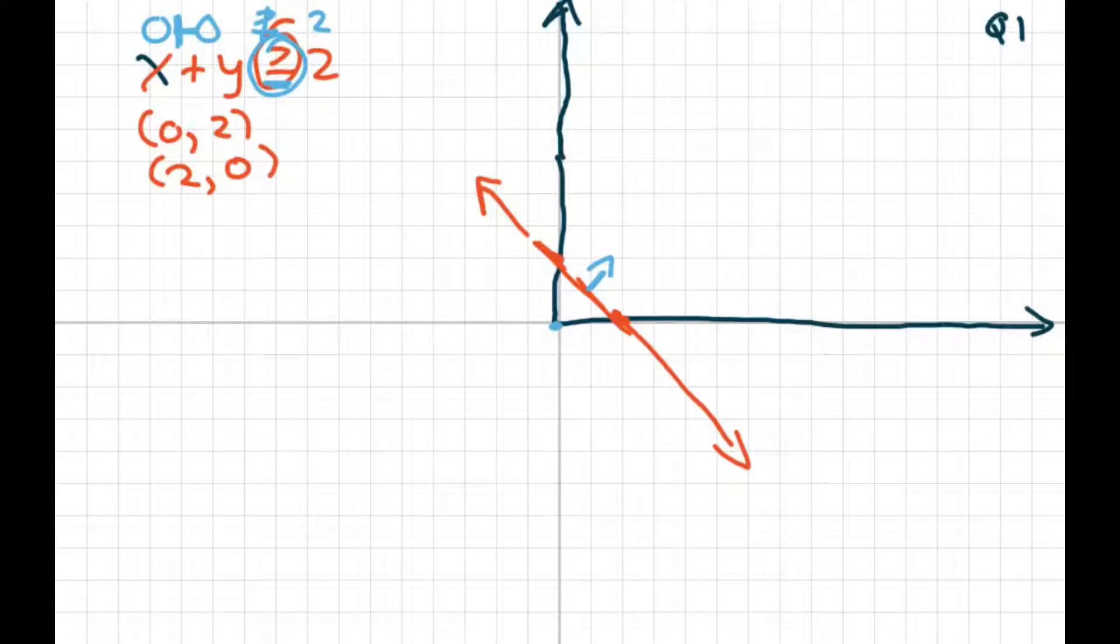Okay, the next one we had was x plus y is less than or equal to 8. So again, when x is 0, y is 8, and when y is 0, x is 8. So I go up here and go over here to 8, and then graph those in here.